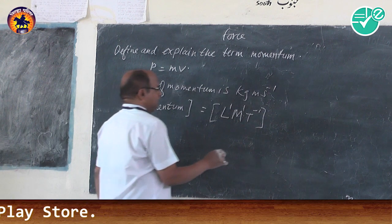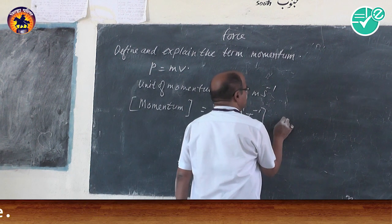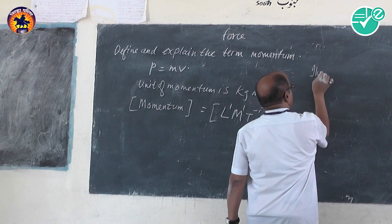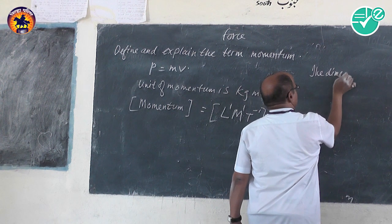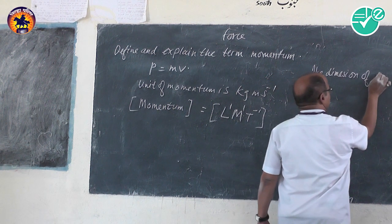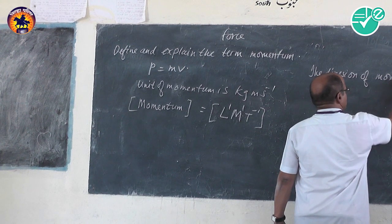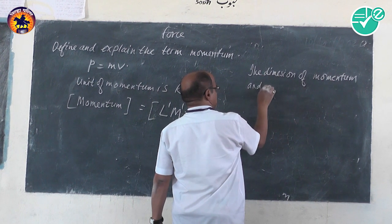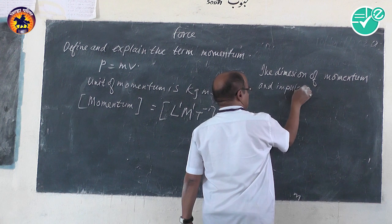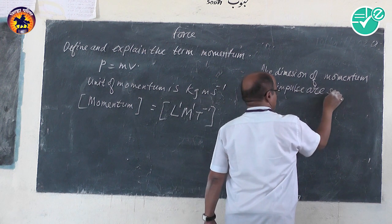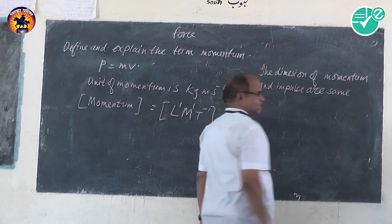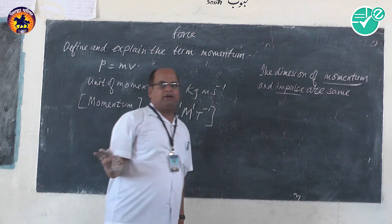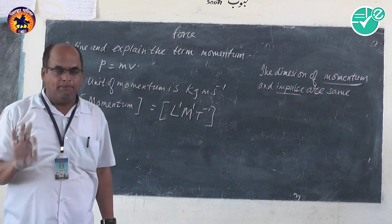The dimensions of momentum, M1 L1 T-1, are the same as that of impulse. Therefore, dimensions of momentum are nothing but dimensions of impulse. This can be an MCQ question — that the dimensions of momentum are same as that of impulse.